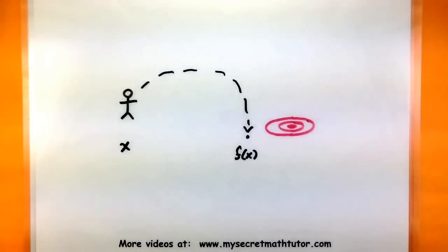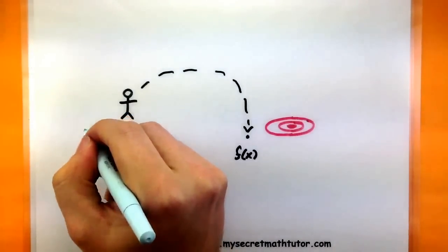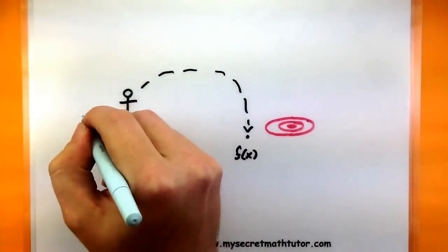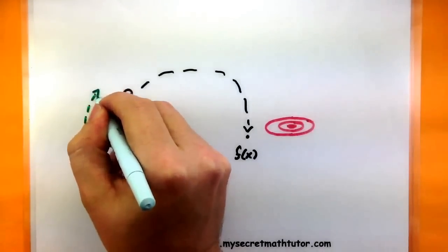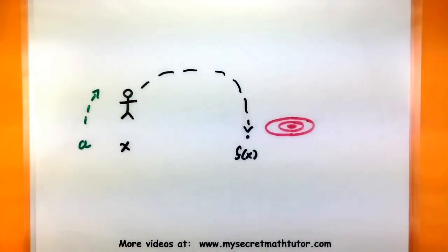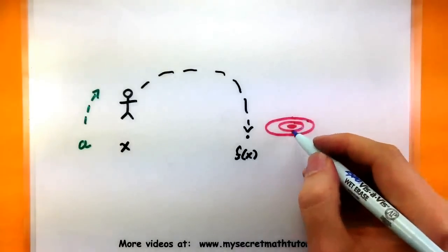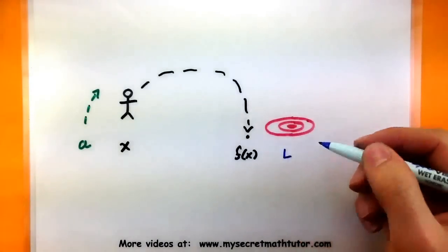Now, as you play this game more and more, you learn a lot about your throwing. And you determine that there's actually some sort of sweet spot that when you stand there, you can pretty much hit the target every time. Let's go ahead and mark out this sweet spot. Let's go ahead and mark out the bullseye of the target as L.